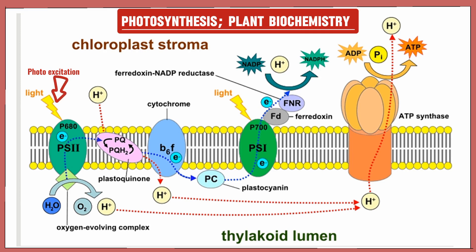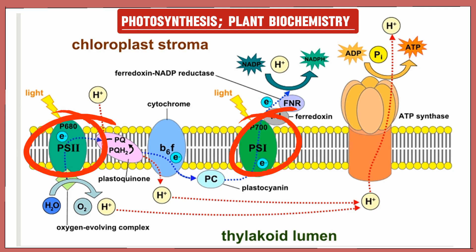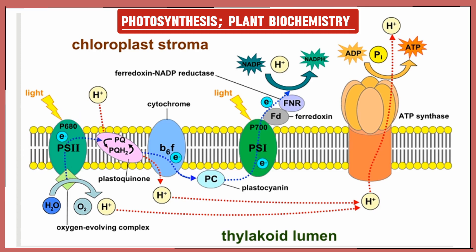The first step in the electron transport chain is photo excitation. A photon excites an electron, and the energy from the photon moves it from a low to a high energy state, which powers the reaction. Photo excitation occurs in two complexes: Photosystem II and Photosystem I, both full of chlorophyll molecules. Resonance energy causes the energy to jump from one chlorophyll molecule to another until it reaches the chlorophyll in the center, where an electron is excited to a high energy state with the potential to do work. This occurs twice — two excited electrons are produced.